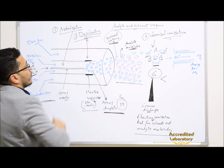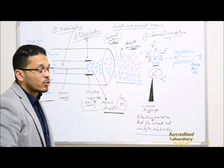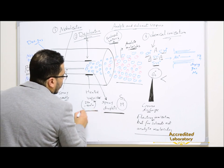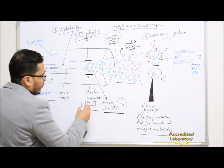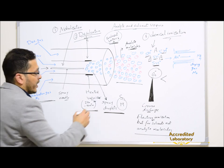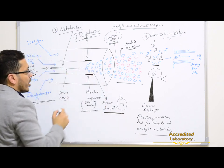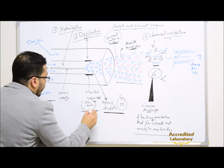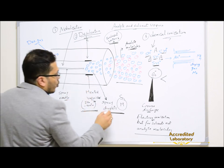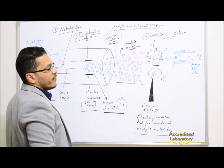Then after that, the desolvation process removes or evaporates the solvent molecules by the effect of a heated vaporizer at 250 up to 400 degrees centigrade. These spray droplets move through that heated vaporizer, and by the effect of the heater and desolvation gas, these spray droplets will be converted to analyte molecules and solvent vapors.